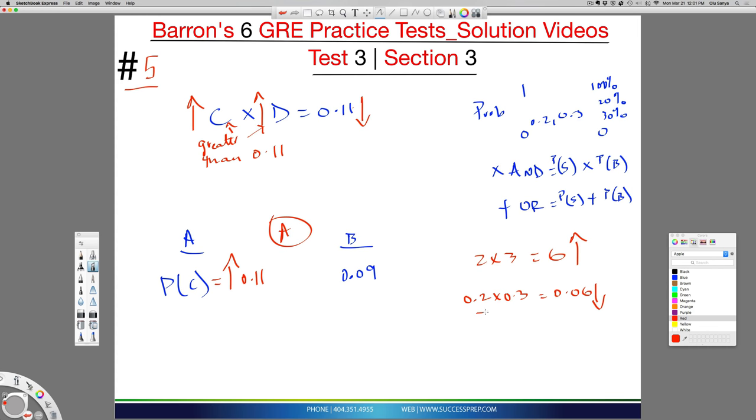Understand the relationship when you're multiplying decimals and the fact that the result is lower. Because of that, I know C and D will be higher than 0.11. And if I'm comparing it to something that's lower than 0.11, something higher than 0.11 would always be greater than something that's lower than 0.11, like 0.09.